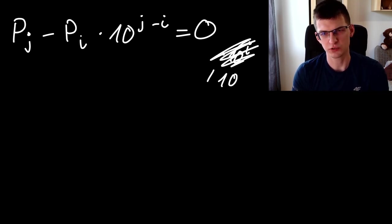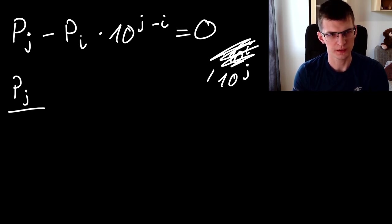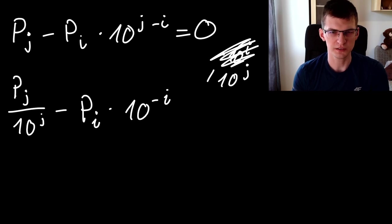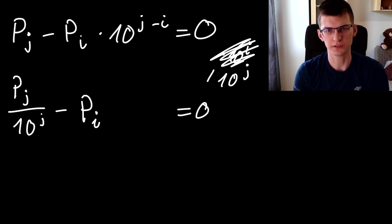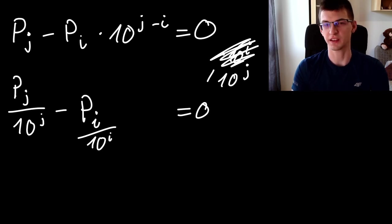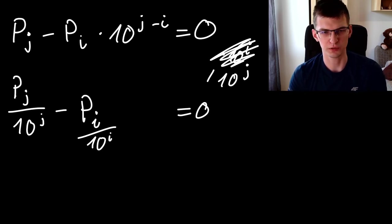Then it will be p of j divided by 10 to j minus p of i times 10 to minus i. And 10 to minus i is equivalent to dividing by 10 to i, so let's remove that and say this. We have some strange fractions, they can be handled with modular inverse, but let's get rid of that by now multiplying both sides times 10 to n.